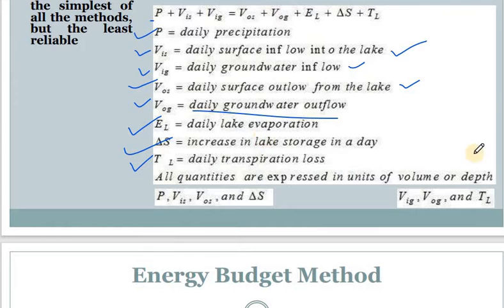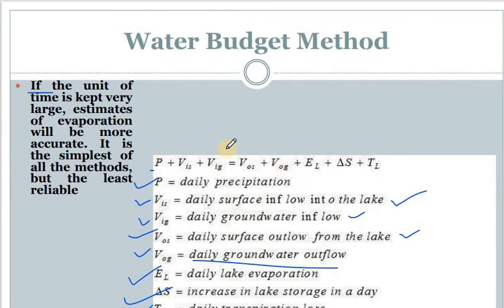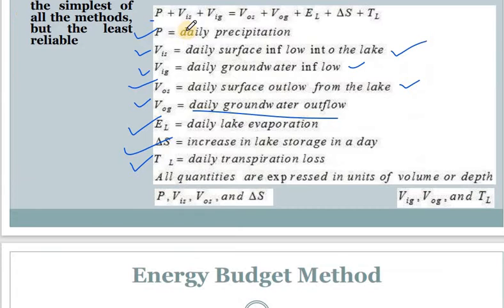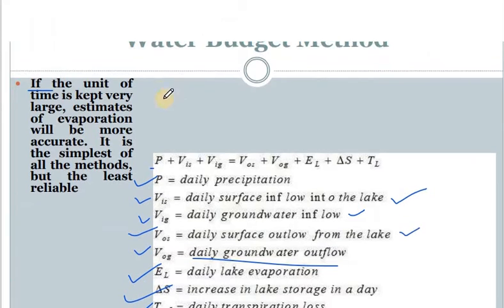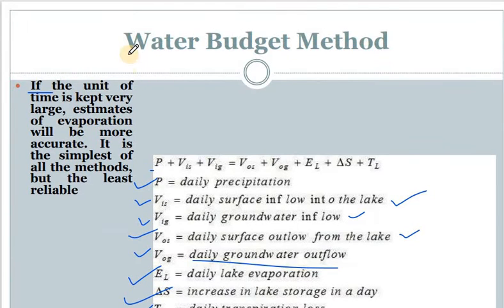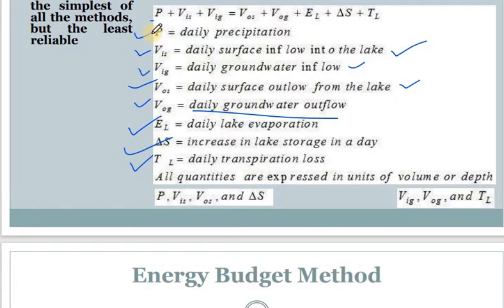All the quantities in the water budget equation are expressed in units of volume or depth so that we can get the value for evaporation. If you want to find out evaporation by the water budget method, we can use this equation — we need to collect all this data and from it we can easily calculate the daily lake evaporation.